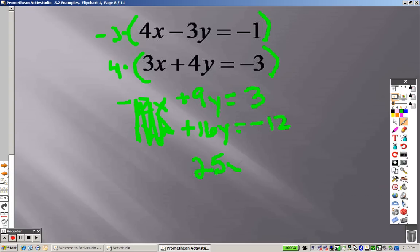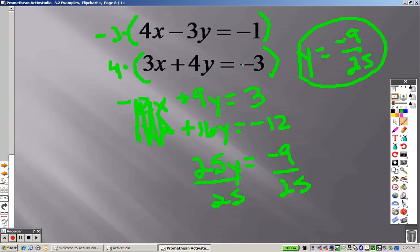I get a 25y equals 3 minus 12. And we get a negative 9. So when you go to solve this, you divide both sides by 25. And when you do that, you end up getting y equals negative 9 over 25. Now, you take that and you plug it in and you can find your answer. That will take forever. Honestly, that will take forever.